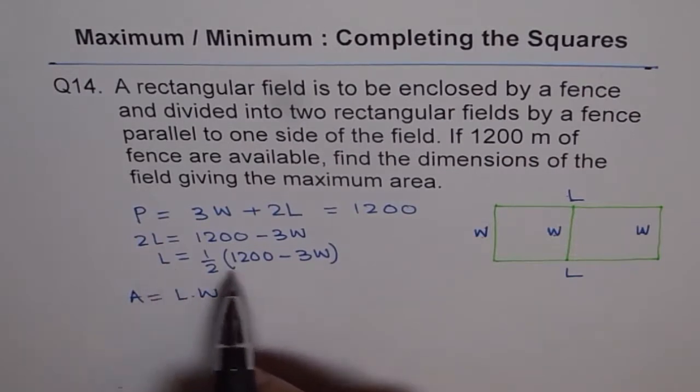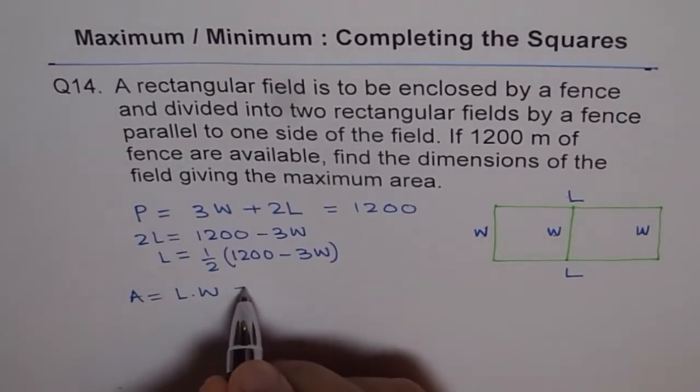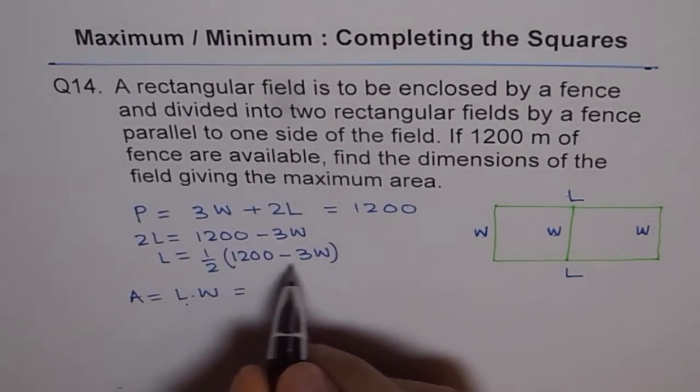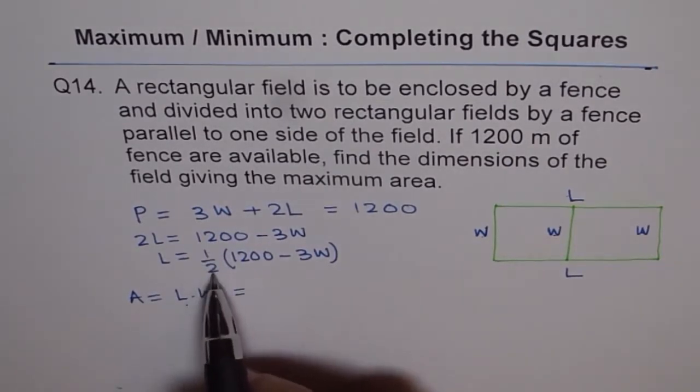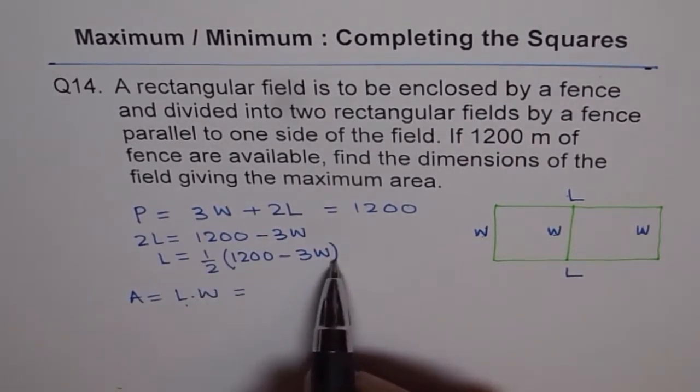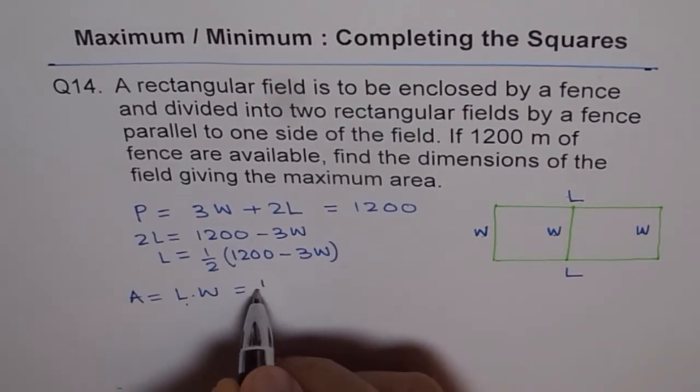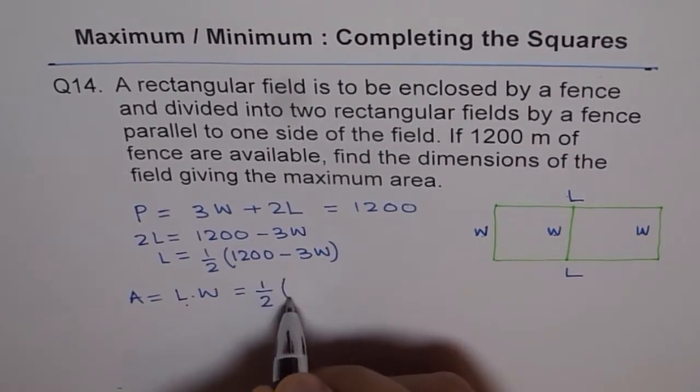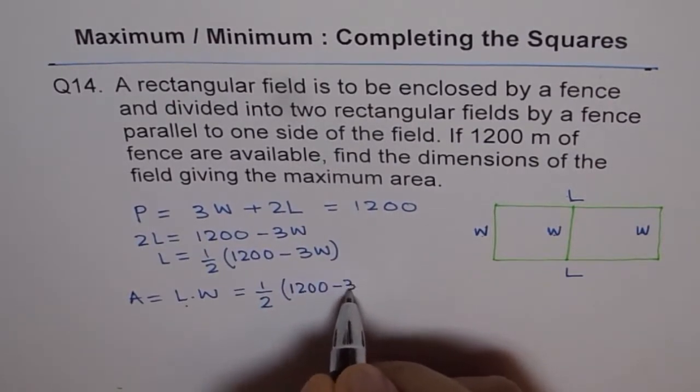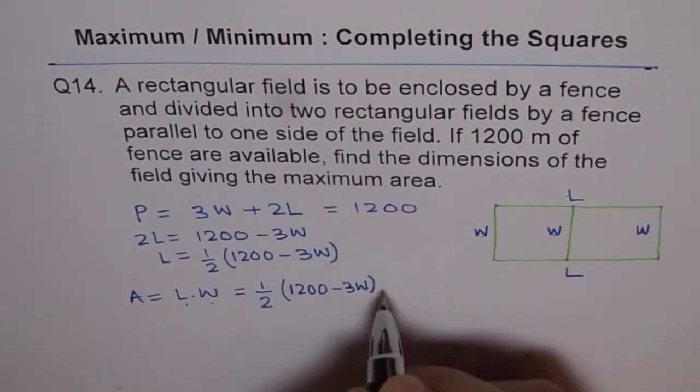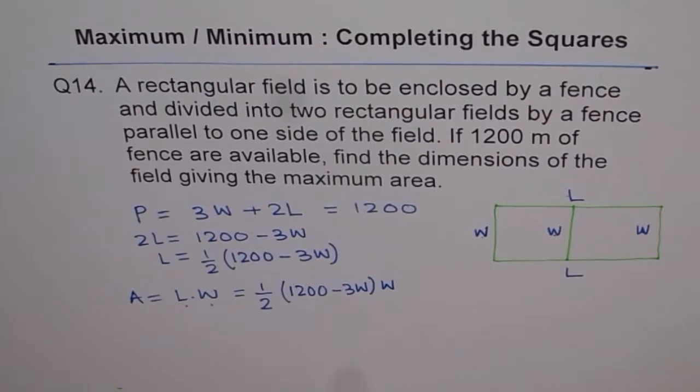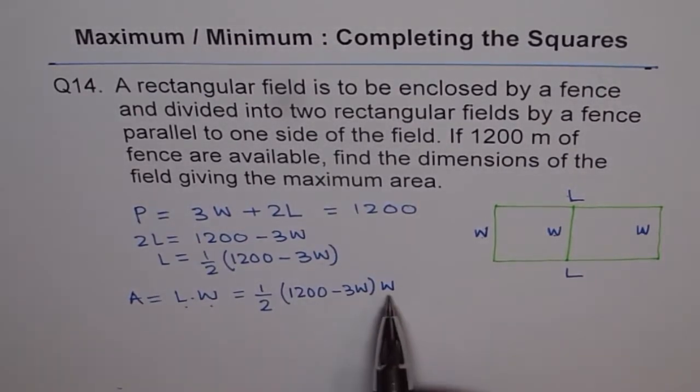Now, we know length in terms of width. Therefore, we can replace this L with this expression, half 1200 minus 3W. So we have times W, right? Will be the area. Half 1200 minus 3W times W. So that becomes area as a function of width. So area in terms of one variable, width.